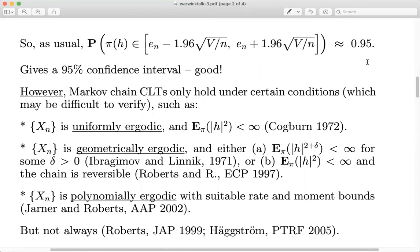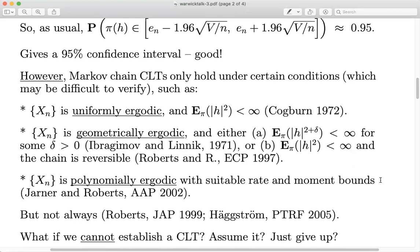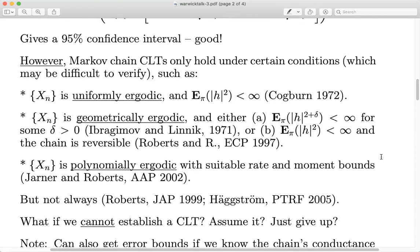There's a counterexample from Gareth where the putative variance goes to infinity for independent samplers, and one from Olle Häggström giving a more complicated example that satisfies conditions which, were it reversible, would guarantee a CLT — but it's not reversible and doesn't have a CLT. So sometimes CLTs don't hold. And from a more applied perspective, it's not that you can't establish a CLT — it's that you don't want to bother proving theorems about CLTs for Markov chains when doing applications of MCMC.